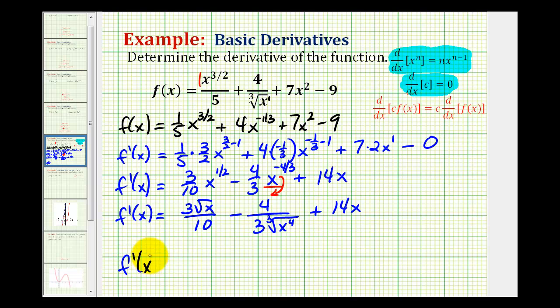So f prime of x is equal to three square root of x divided by ten, minus four, and the three is here, and then because there's three factors of x underneath here, we'd have x times the cube root of x, plus fourteen x.